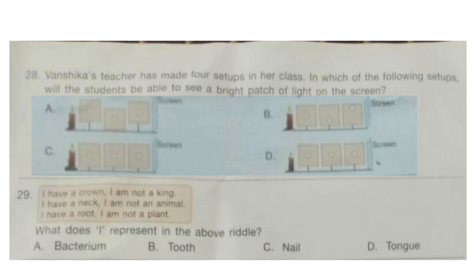Question 29. I have a crown, I am not a king. I have a neck, I am not an animal. I have a root, I am not a plant. What does 'I' represent in the above riddle? Options are: bacterium, tooth, nail, or tongue. The correct answer is option B: tooth.